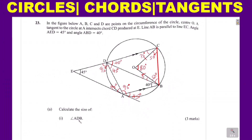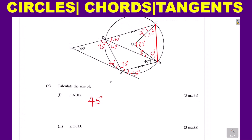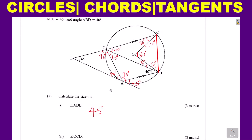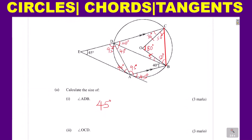Angle ADB: we already obtained that as 45 degrees. In this question, we are not required to give reasons, but the property used would be stated if needed. Angle OCD: we also obtained that angle as 35 degrees.